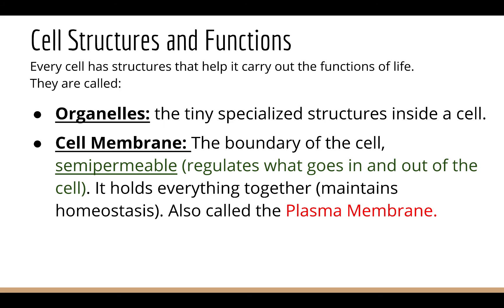The cell membrane also holds everything together, keeps everything in one spot, and allows homeostasis to take place. Remember from the beginning of the year, homeostasis is trying to keep everything at the right levels for you to survive — the right amount of oxygen and carbon dioxide, the right pH in your blood, things like that. So the cell membrane helps keep homeostasis occurring.